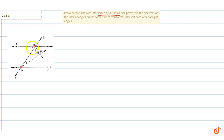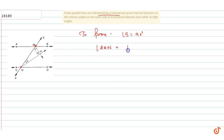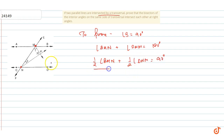We have to prove that these angle bisectors meet at a right angle, so we have to prove that angle 3 is equal to 90 degrees. We know that the sum of interior angles on the same side of the transversal equals 180 degrees. So angle BMN plus angle DNM equals 180 degrees. Taking half of each: half of angle BMN plus half of angle DNM equals 90 degrees.